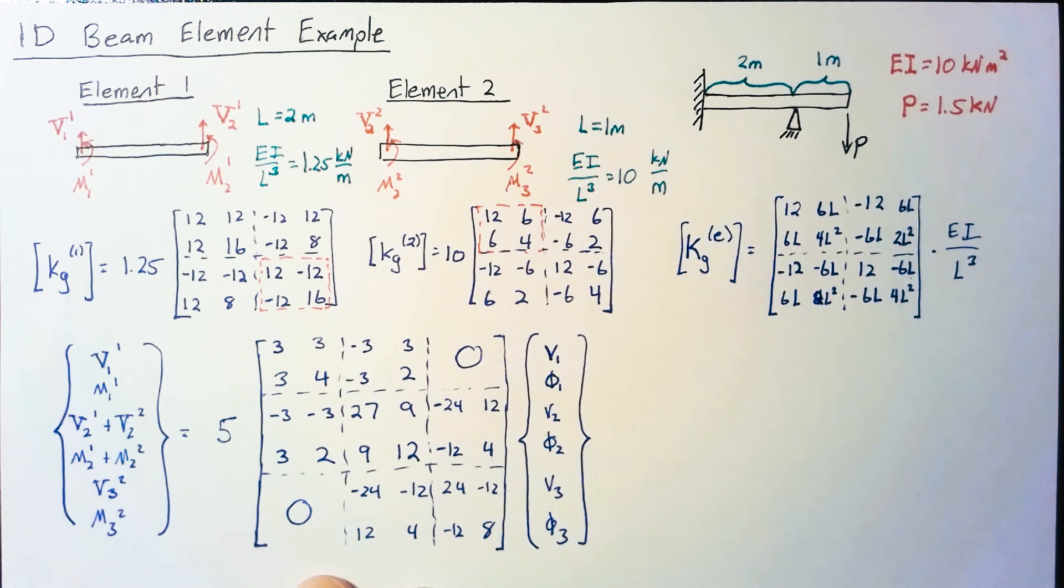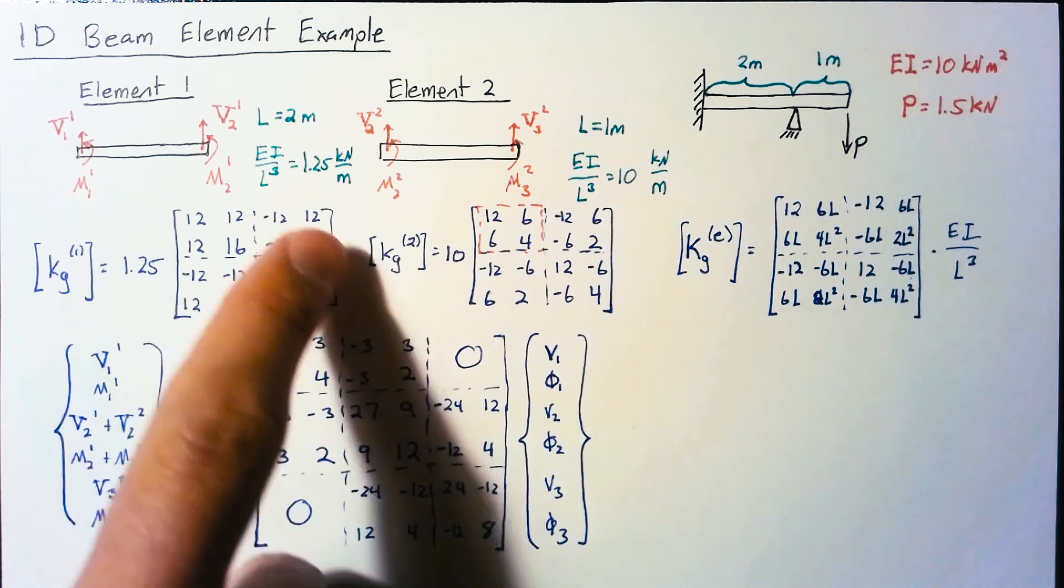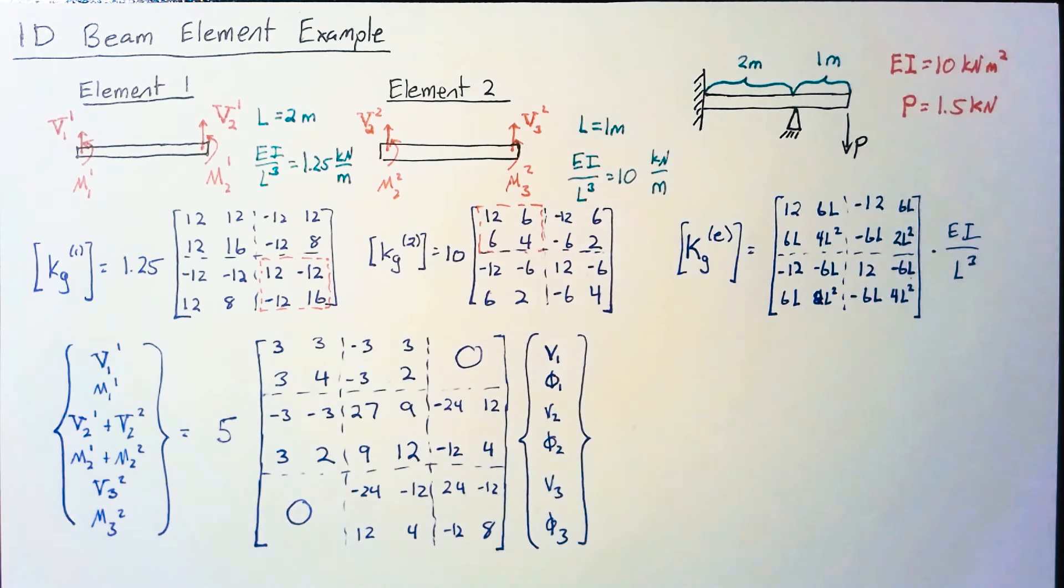Creating this matrix was complicated by wanting nice clean numbers. If we were doing this on a computer, it doesn't care if the numbers look nice. You just distribute the 1.25 and the 10, add them together. It looks messy but the computer doesn't care.